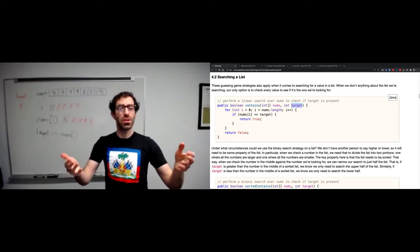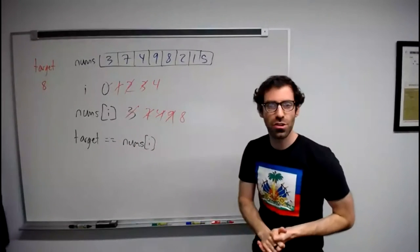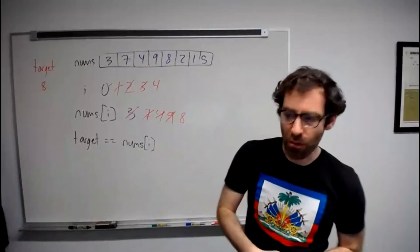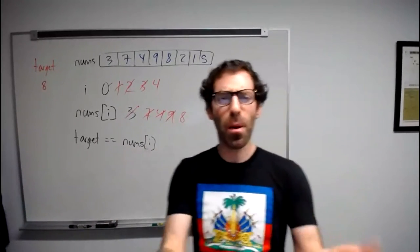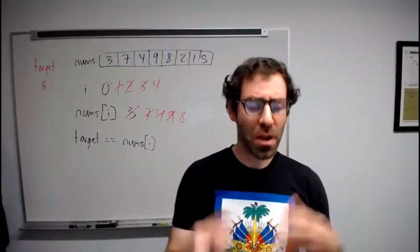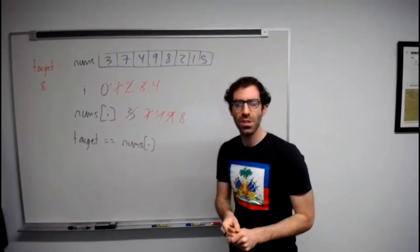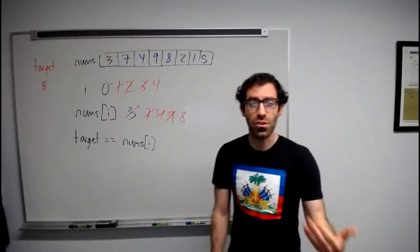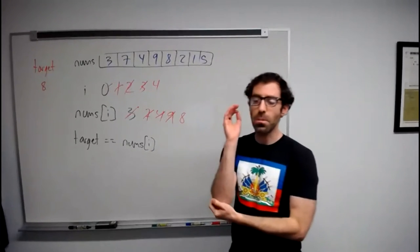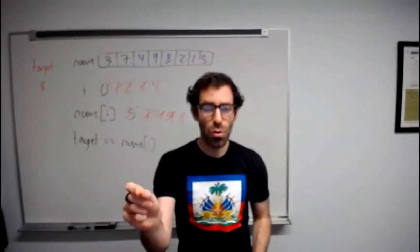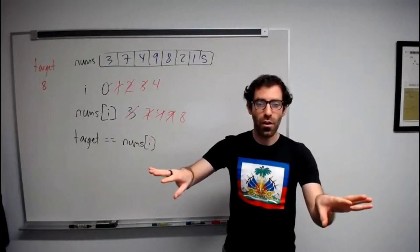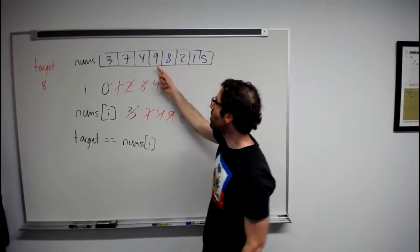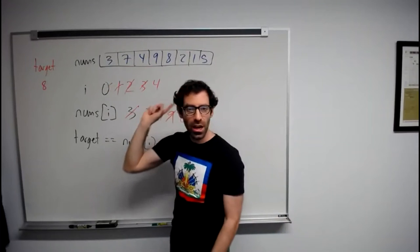Under what circumstances could we use the binary search strategy of checking the middle, ruling out half, then checking the middle of the remaining half? We don't have another person to say higher or lower, so we're going to need to rely on some property of the list. The key thing we will rely on is that the list needs to be sorted. If the list is unsorted and all jumbled up, comparing target to the middle element won't tell us which side to look on next.